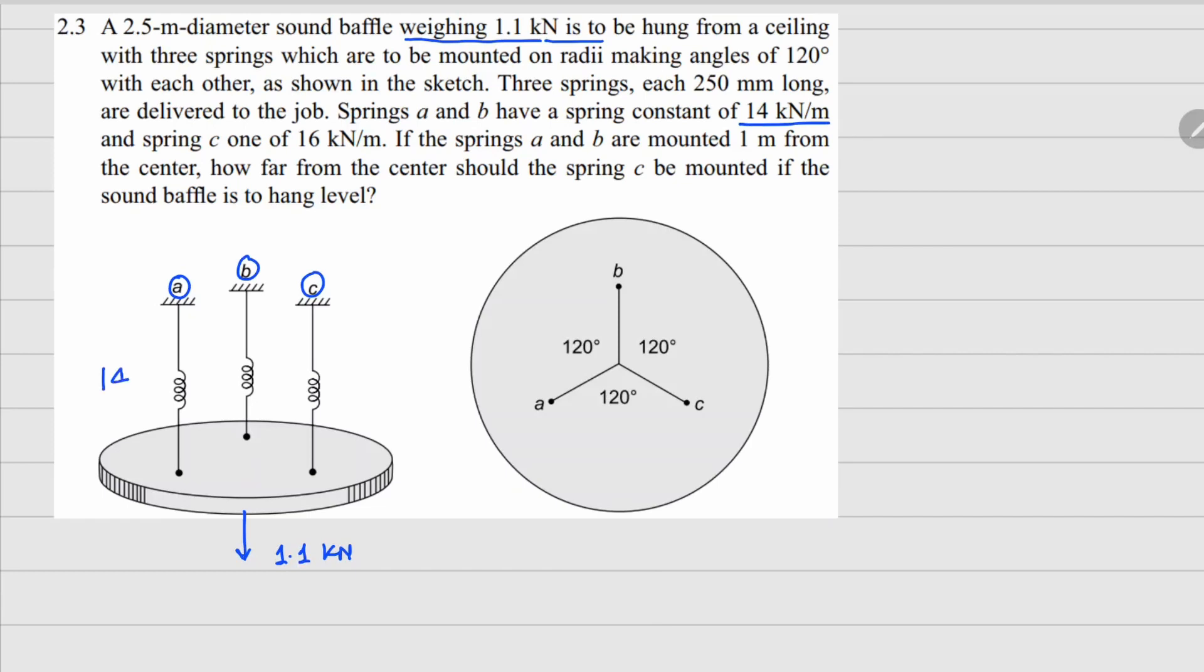This is 14, this one is 14, and C is 16. Both spring A and B are located at a distance of one meter from the center. We need to figure out at what location C is so that this remains level, so we are looking for this x value as a distance.